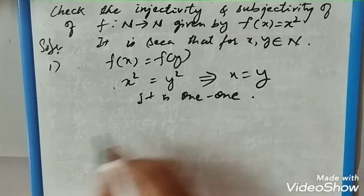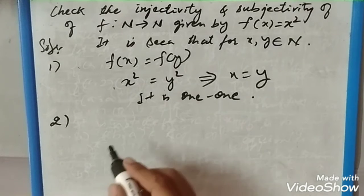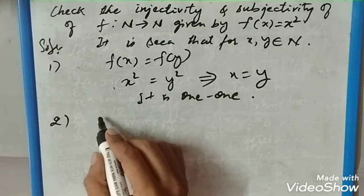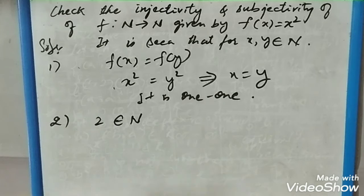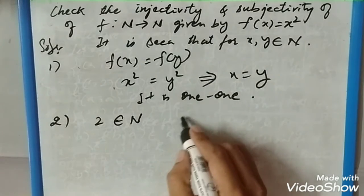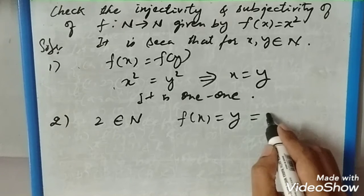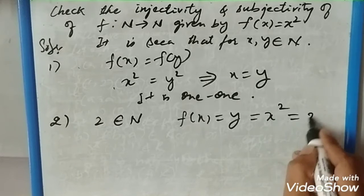Let us take one number, suppose 2, which belongs to natural number N. Then x does not exist for f(x) = y. Why? Because y should be equal to x², which equals 2. We have taken y as 2, so x² should equal 2, which is not possible.